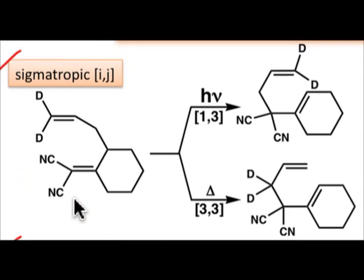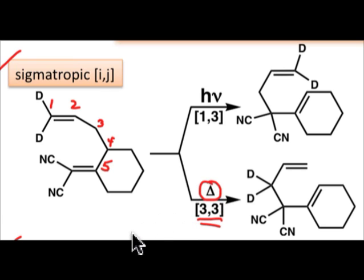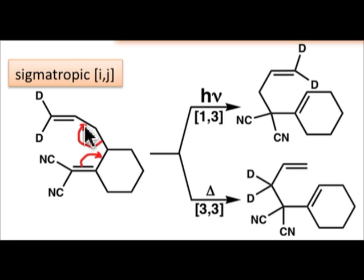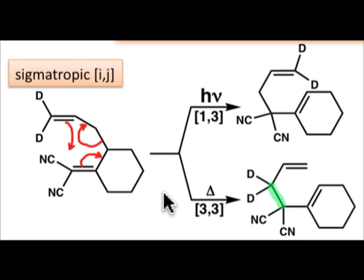If we see a substrate like this — a 1,5-diene — we would think about a 3,3-sigmatropic rearrangement, and that's indeed what takes place under thermal conditions. If we heat this molecule up, the 3,3-sigmatropic rearrangement takes place by the curved arrows shown here, so that the di-deutero-substituted carbon attaches to the di-cyano-substituted carbon, making the new bond shown in the product. There are three curved arrows describing the process, meaning six electrons are involved.